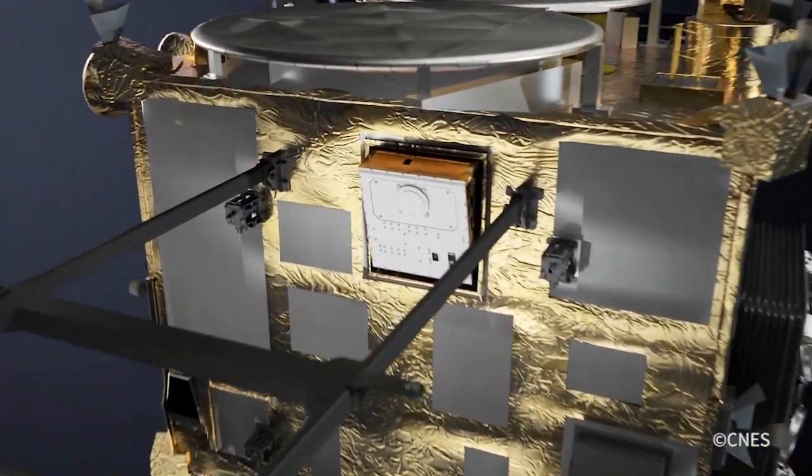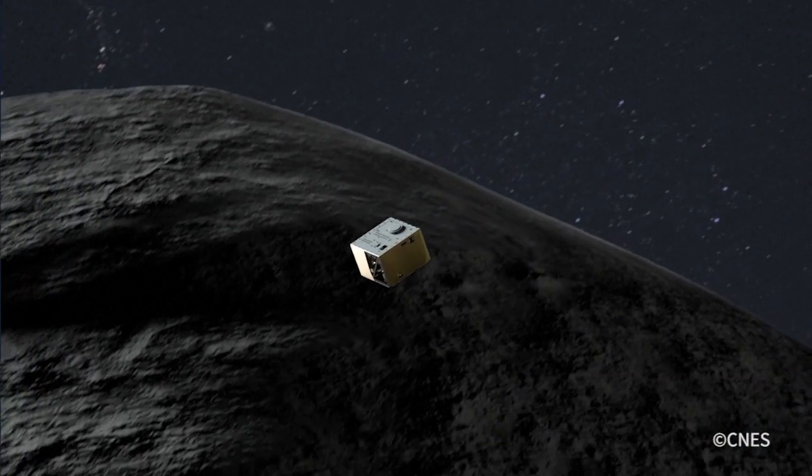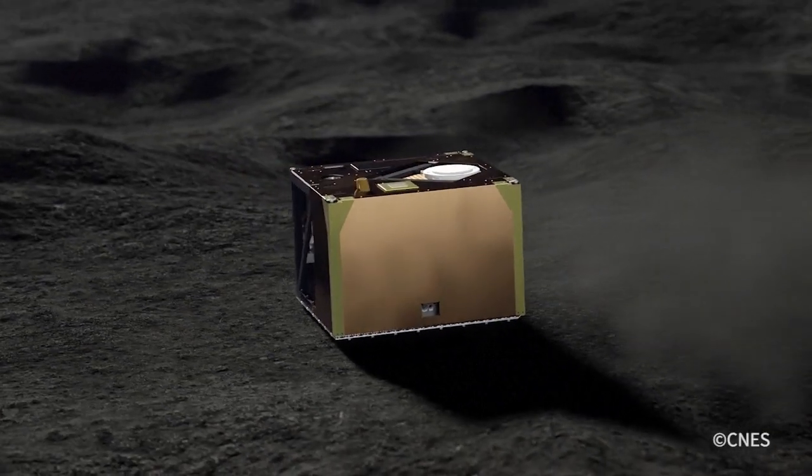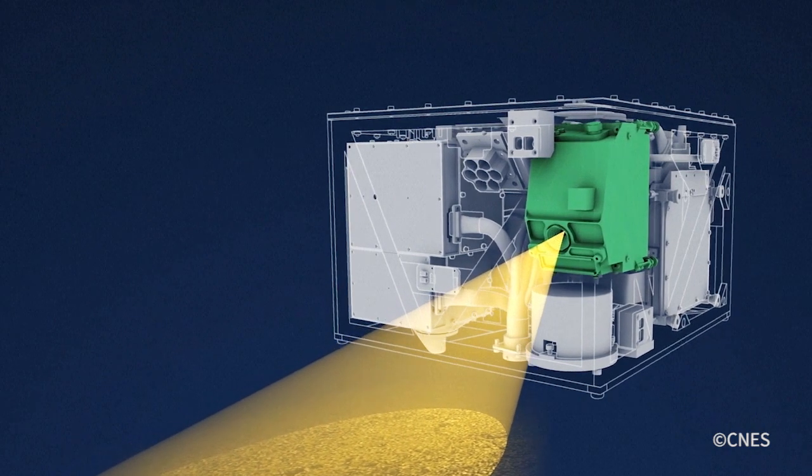In October 2018, the probe dropped a French-German-built mini-robot on Ryugu, whose mission is to analyze the mineralogical composition of the asteroid, its temperature and magnetic field.